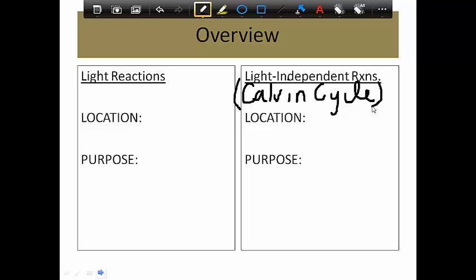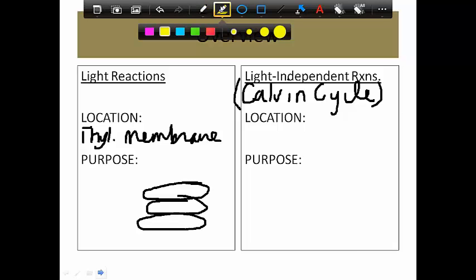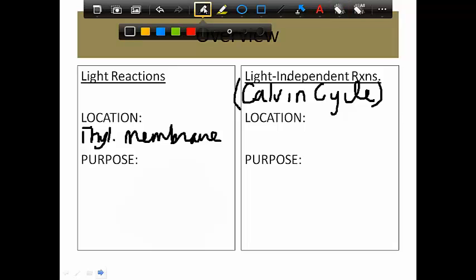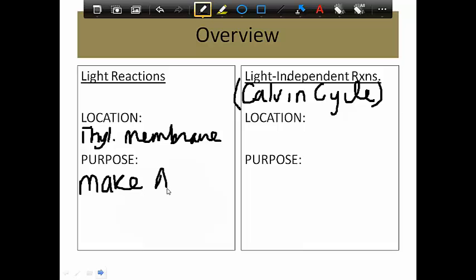The light reactions. Where do the light reactions actually occur? They occur on the thylakoid membrane. So if we go back to that drawing that I was looking at earlier, the diagram, we have those stacks of pancakes. Each one was called a thylakoid, so it's that actual membrane of the thylakoid along the edge of it where our light reactions are taking place. The purpose of the light reactions is to make ATP and NADPH.